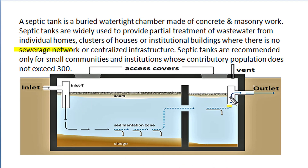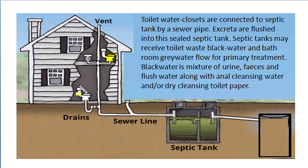Such septic tanks are widely used to provide partial treatment of wastewater from individual homes, clusters of houses in a colony, or institutional buildings or hostels, where there is no centralized sewerage network. Such septic tanks are recommended only for small communities and institutions where the total contributory population doesn't exceed 300. Water closets of toilets and other wastewater sources are connected directly to the underground septic tank by sewer pipeline, and human excreta are directly flushed into the septic tank through sewer lines.